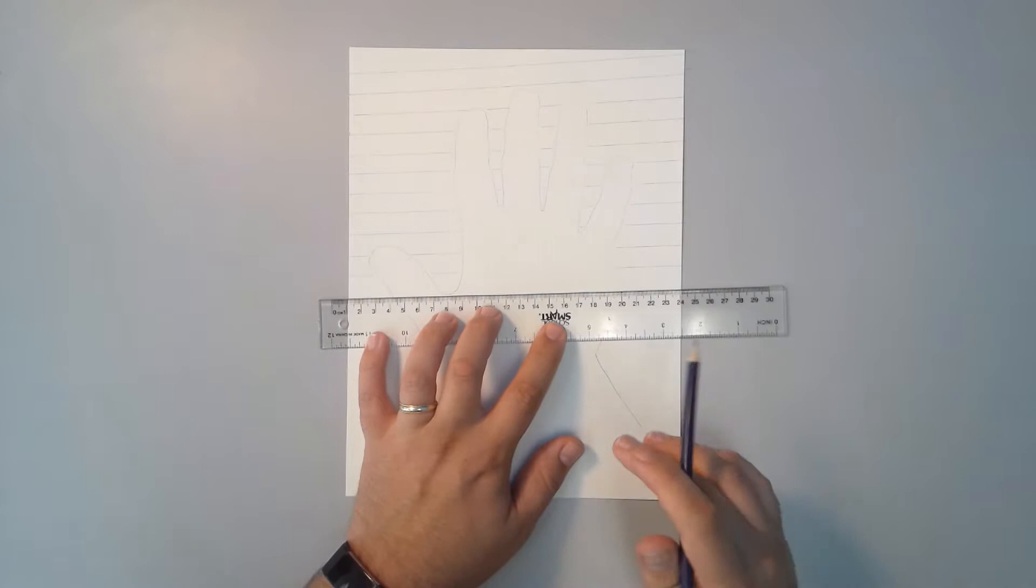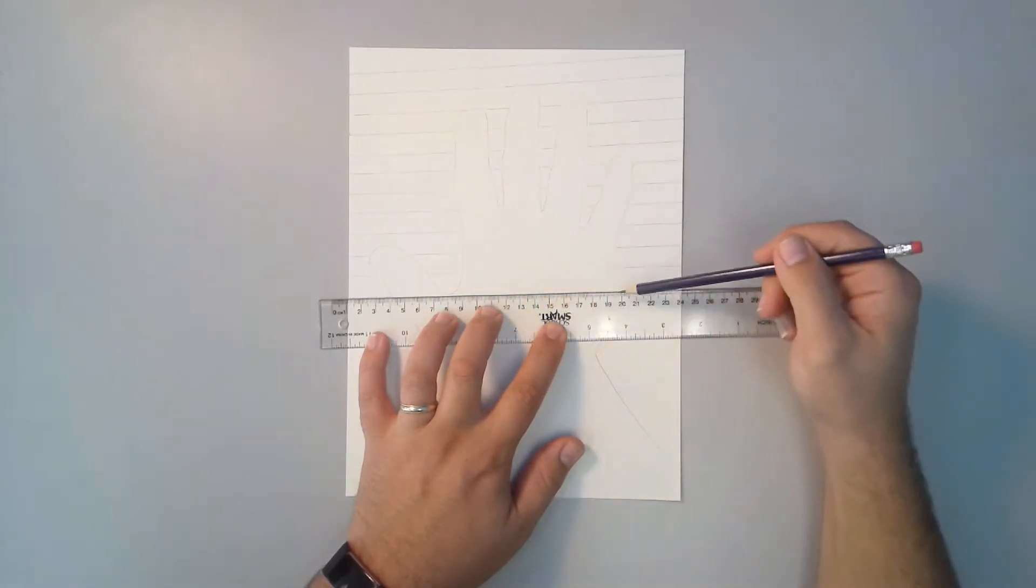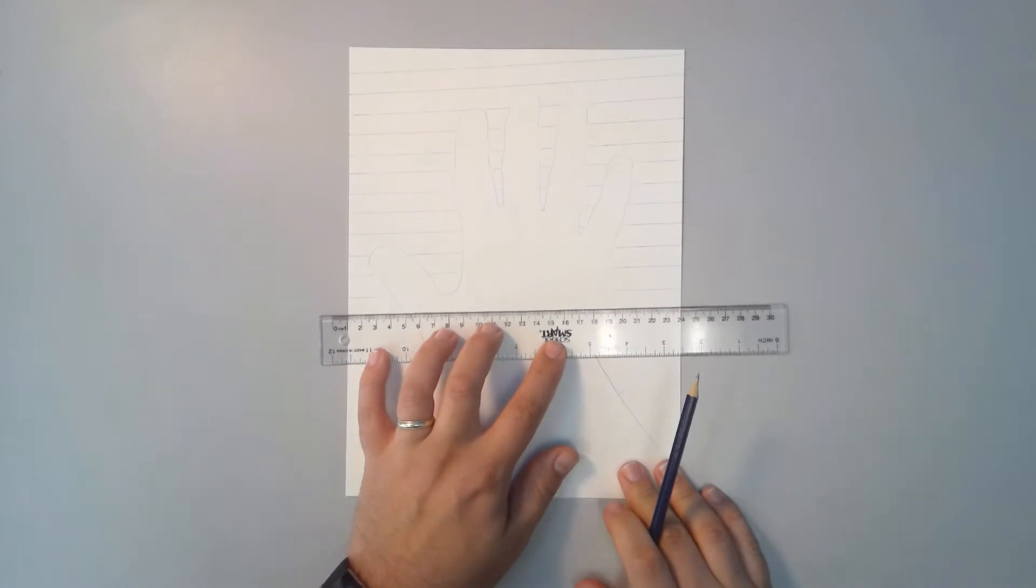After you're done drawing your straight lines across the background, we'll go back in and make some curvy lines to create a 3D effect.